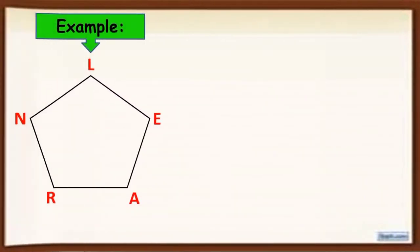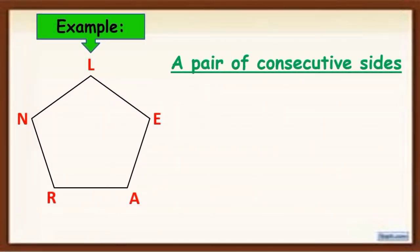Next, when we say a pair of consecutive sides, when we say consecutive, magkasunod. So what are the sides? One of the example is side NL or line segment NL and line segment LE. So that are examples of consecutive sides. So marami pa diyan consecutive sides - NL and LE, pwede rin LE and EA, pwede rin EA and AR or AR and RN or RN and NL. So pag sinabi natin consecutive sides, magkasunod na sides.